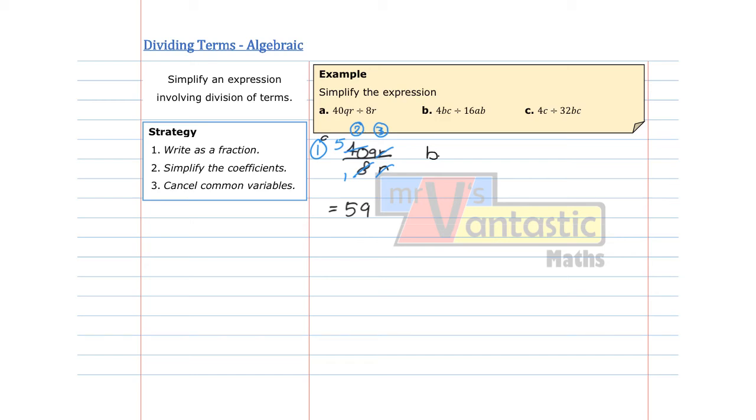The next one we want to simplify is 4BC divided by 16AB. And again we will start by rewriting the division into fraction form.